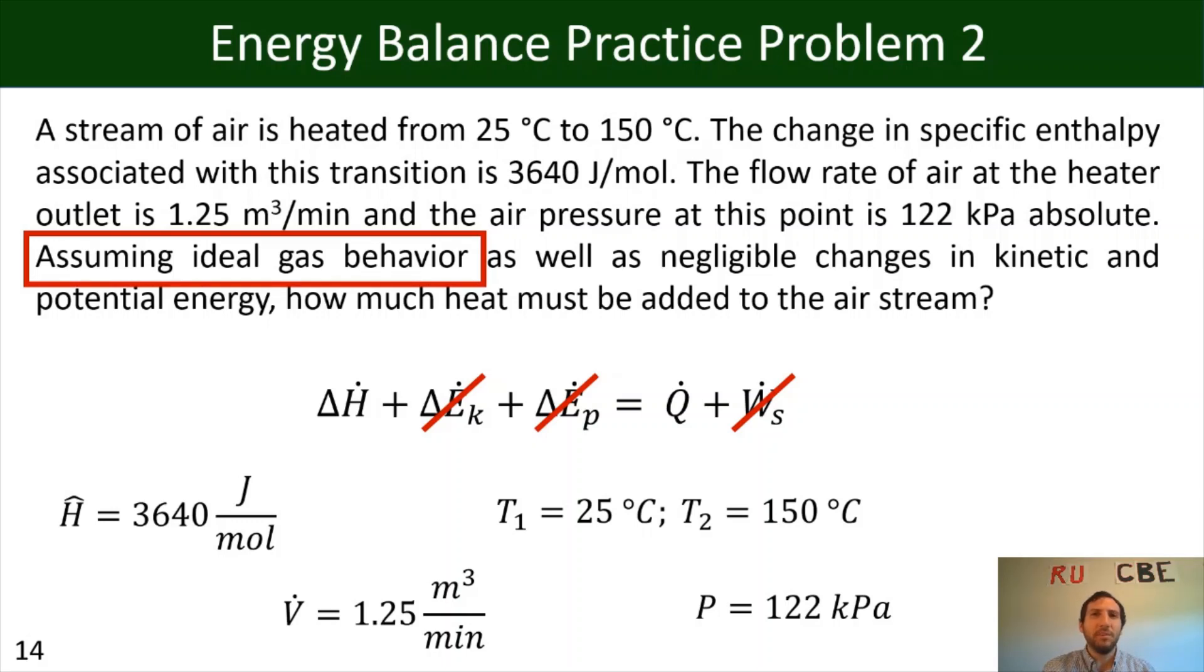And why would that be useful for us? Well, because we can assume, well, actually, looking at the enthalpy term, it's in terms of joules per mole. And we know that's a specific enthalpy, so in order to go from specific enthalpy to an actual change in enthalpy, we need to multiply by a flow rate, either a mass or a molar flow rate. And since this specific enthalpy is in terms of moles, we're going to need to multiply by a molar flow rate to convert. And because of that, because we need a molar flow rate, what we're going to do then is we're going to use the ideal gas law to back out the molar flow rate. And that's why that assuming ideal gas behavior is so important for us.